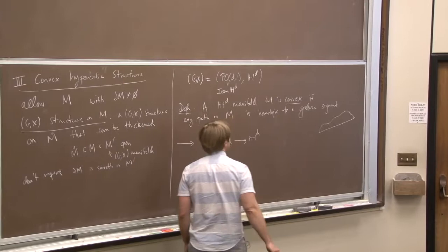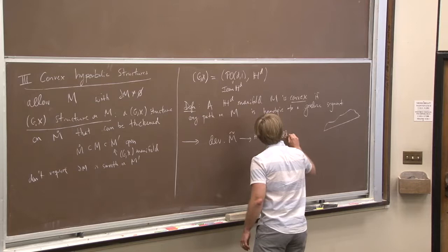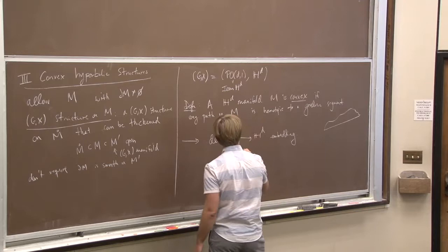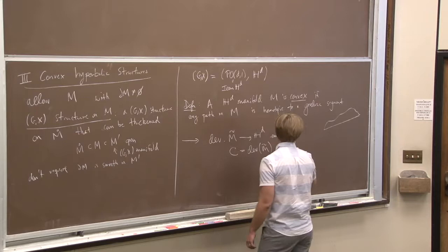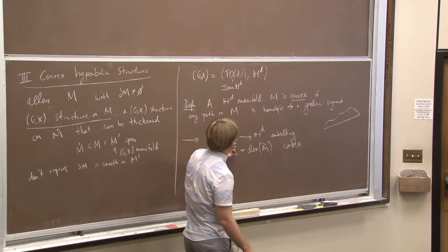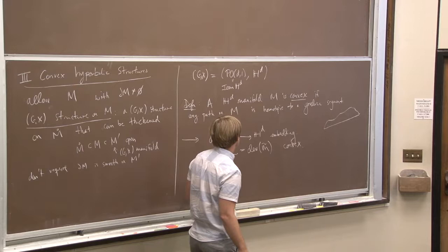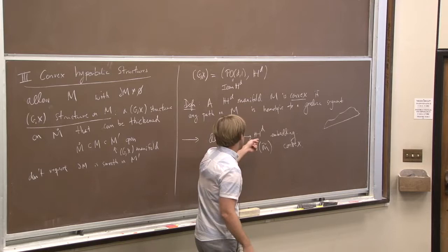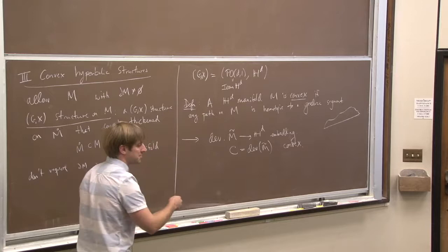So any path in M can be straightened out to a geodesic still living inside of M. An obvious property here is that if I take the developing map for such a structure, that's actually an embedding. So it's an embedding of M-tilde, it identifies M-tilde with C, a convex subset of H_d. Why is it injective? Well, two points here have a path between them. That path can be straightened to a geodesic. And geodesics in H_d have unique endpoints — there's no geodesic in H_d that comes back.